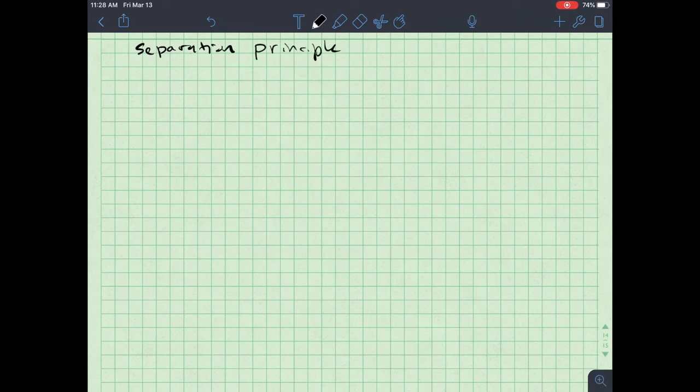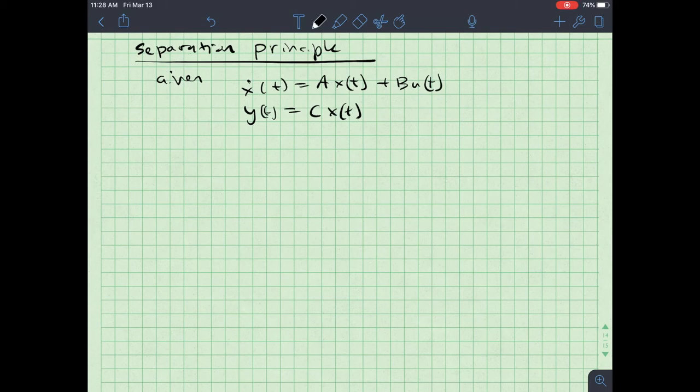So separation principle is the first topic here. So we're given a plant or a system. Given the system x dot of t equals a x of t plus b u of t. And the output y of t is equal to c x of t. What I want to do is also add in an observer based controller. So that's my system.